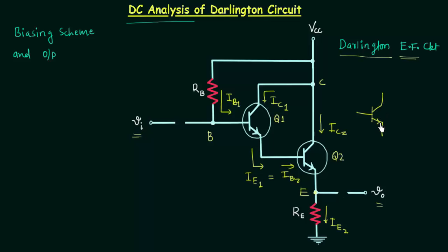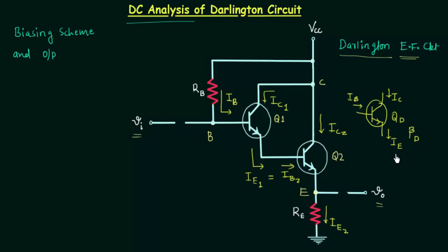This is the Darlington transistor represented by QD, with base current IB, collector current IC, and emitter current IE. The gain of the Darlington transistor is βd. IB1 is the same as IB, so instead of representing this current as IB1 I will represent it as IB. IE is the same as IE2, so I will represent the current through resistance RE as IE.